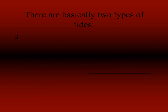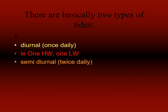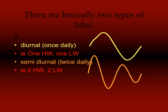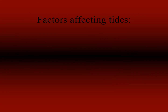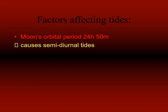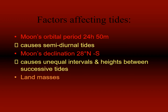There are basically two types of tides. Diurnal tides occur once daily — one high water and one low water. Semi-diurnal tides occur twice daily — two high waters and two low waters. The two high waters on a given day are typically not the same height, giving a daily inequality — the higher high water and the lower high water. Similarly, the two low waters are not of the same height — the higher low water and the lower low water. The daily inequality is generally small when the moon is over the equator, as it is affected by the declination of the moon. The moon's orbital period and the moon's declination cause unequal intervals and heights between successive tides.